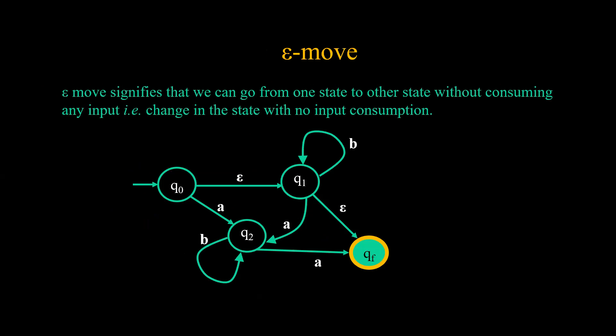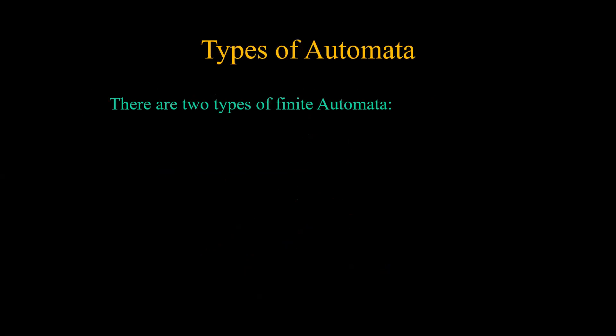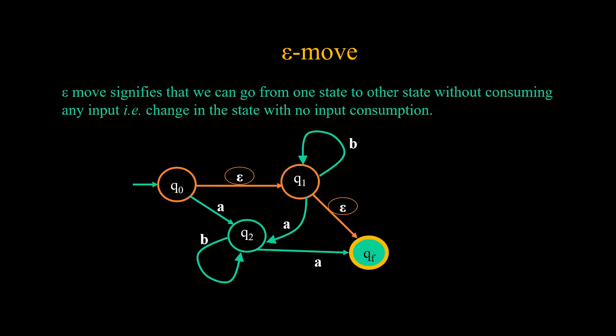Another important concept is the silent move, also called the epsilon move. A silent move signifies that we can go from one state to another without consuming any input — that is, a change in state with no input consumption. For example, we can move from state Q0 to Q1, and from Q1 to QF, without consuming any input.